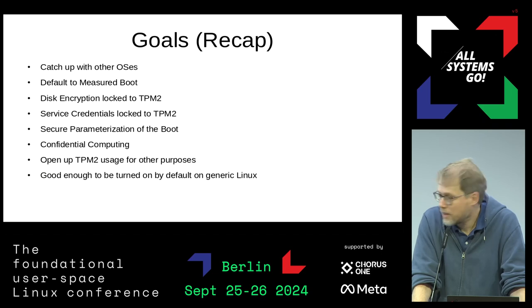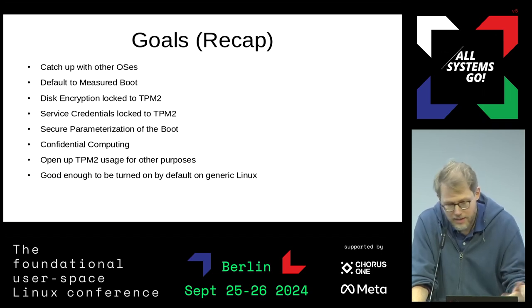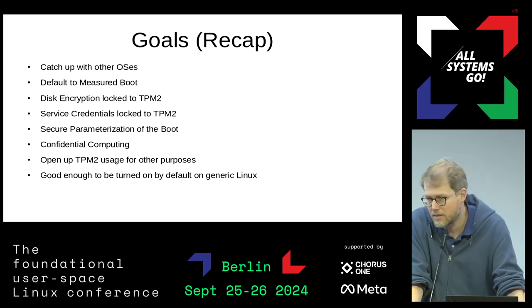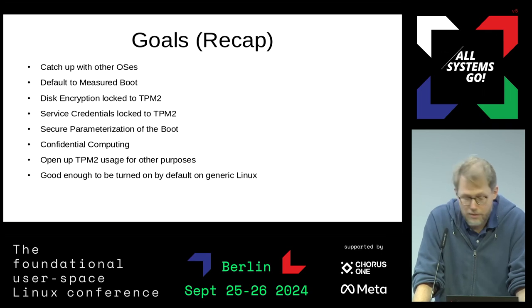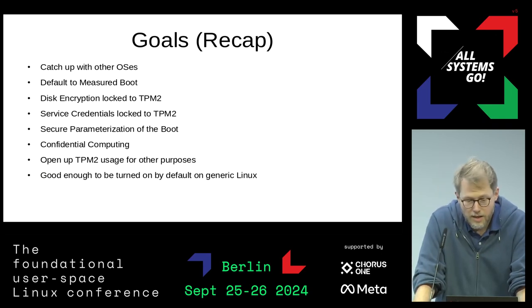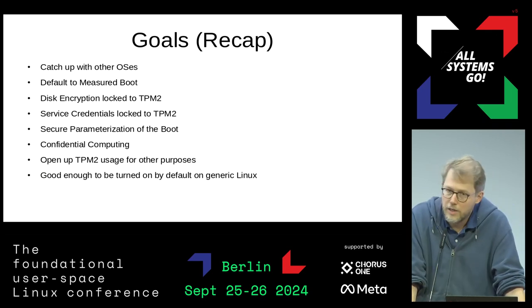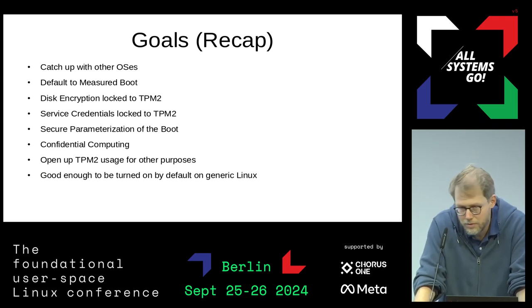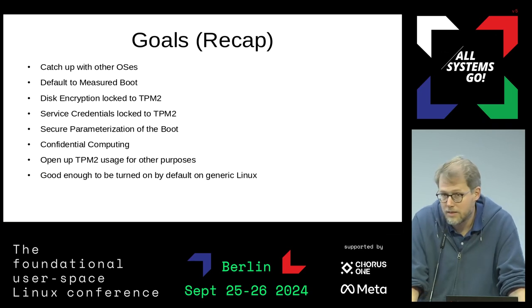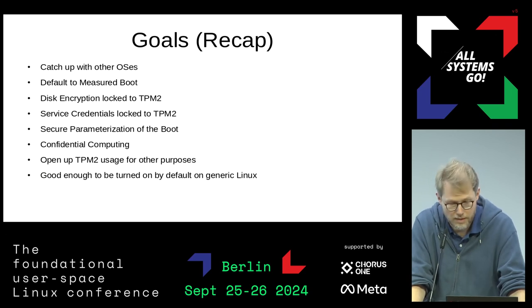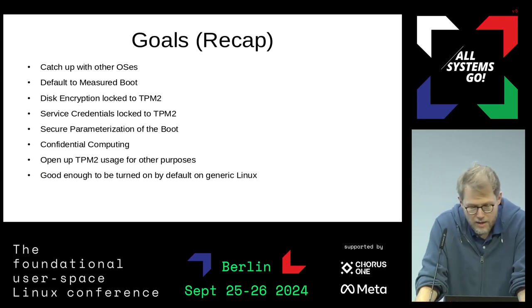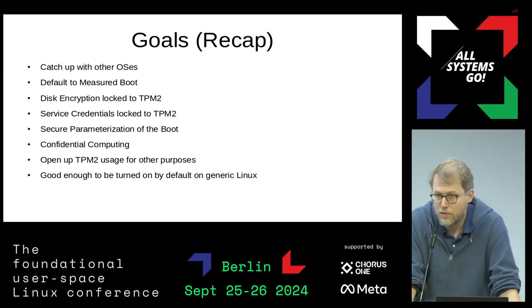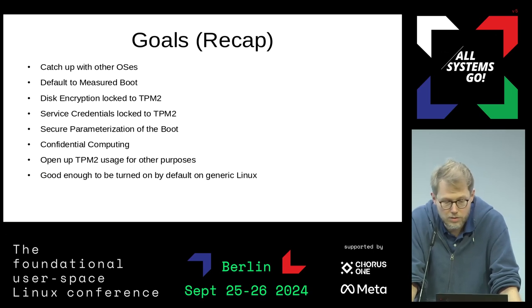Just a quick recap on goals — I literally copied this from last year's slides, just to make everyone understand what I'm actually going for. The general goal is to catch up with what other OSes have. Most relevant OSes nowadays have by default TPM or some equivalent measurement system integrity concept. Windows has it, Android has it, Chrome OS has it, Mac OS has it, the iPhone OS has it. Everybody has it. The goal is to catch up so that generic Linux distributions have the same level of system integrity — specifically meaning we can default to measured boot and lock disk encryption to that.